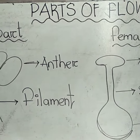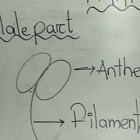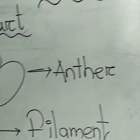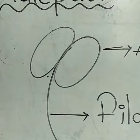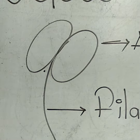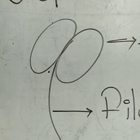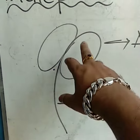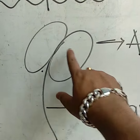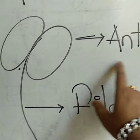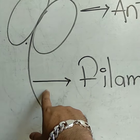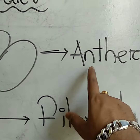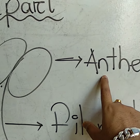You can see that I have also drawn here. This is the male part of flower, and this is the female part of flower. The male part of flower is called stamen. This is called anther, and this part is known as filament.